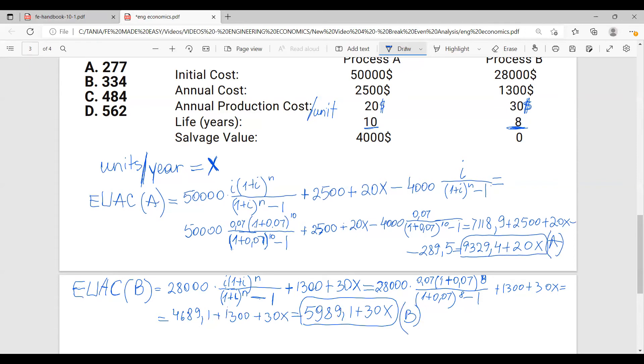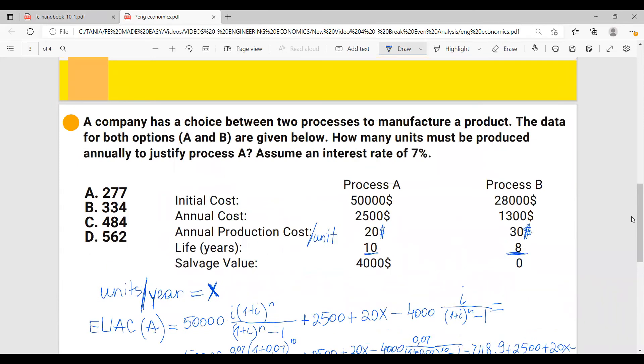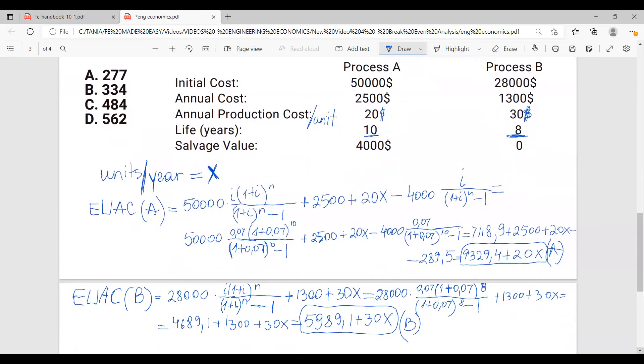Here is for process A. And now let's think about it a little bit. So we have process A annual cost, process B annual cost. And the problem is asking us to calculate how many units must be produced annually to justify process A. That means that we have to justify process A. That means the equivalent annual cost of process A must be less than process B.